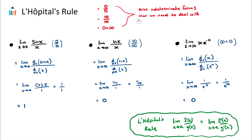The three answers we got are the three indeterminate forms we need to deal with. What that means is that we don't actually have an answer for our limits. So we can use L'Hopital's rule to help us solve them. Basically, if the limit is in one of these three indeterminate forms — zero over zero, infinity over infinity (positive or negative), or infinity times zero — what we can do is take the derivative of the numerator and the denominator. We can do this multiple times if needed, and then try to solve the limits.